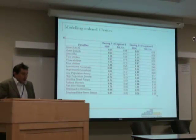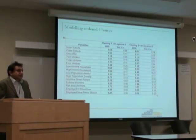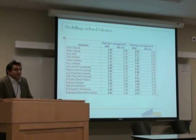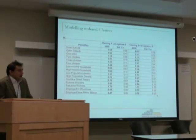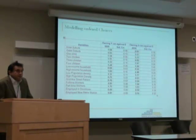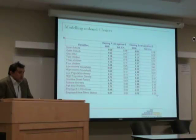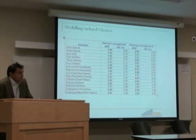For outer suburbs, the odds ratio is 1.93, meaning the odds are higher by 93% for a household in the outer suburbs of owning one car against no car, all else being equal.